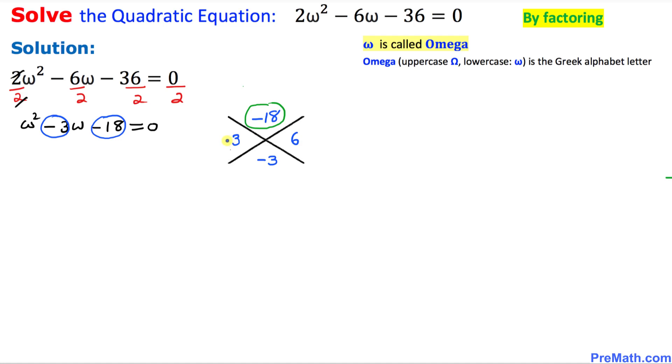The sign is going to be +3 and -6. As you can see, if we add these numbers, we get -3, and if we multiply, we get -18.